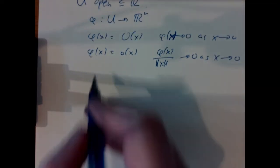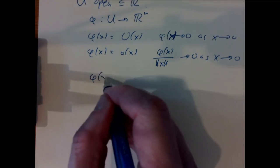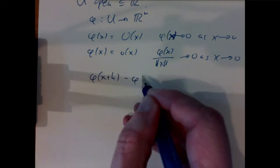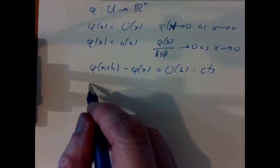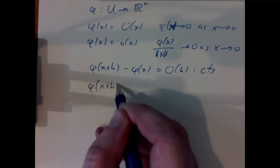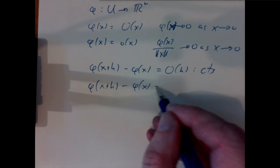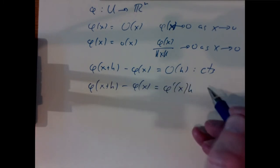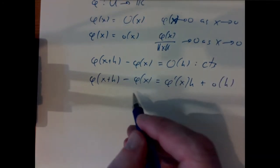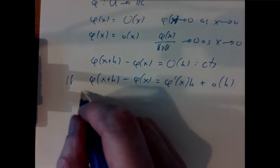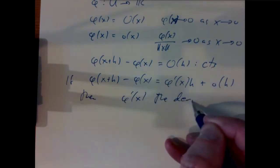In particular, the map is continuous when φ(x) minus φ(x) is O(h). Naturally we want to think about being differentiable, and that would be essentially the same sort of expression, but φ(x+h) minus φ(x) should be some φ′(x)·h plus something which is little-o of h. If this happens, then φ′(x) is called the derivative of φ at x.